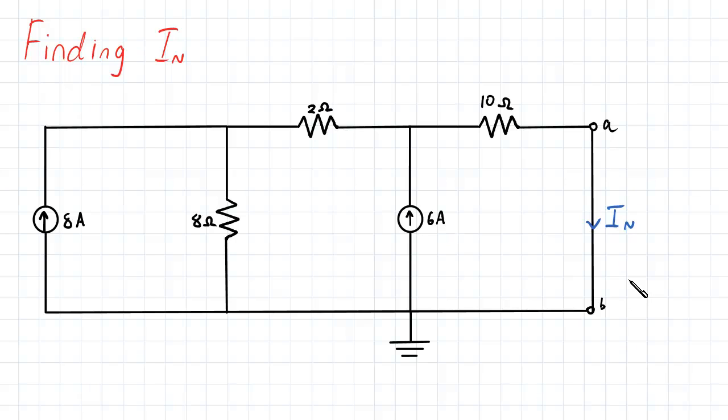Now in order to find this short circuit current, we can use either mesh analysis or nodal analysis. If we use mesh analysis, due to the fact that there is a current source in between two meshes, then we will need to use a super mesh method.